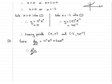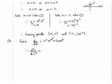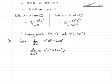We use the product rule again on x²eˣ. We've already done that — that was y originally — and it gave us x²eˣ + 2xeˣ, so we can reuse that result, which saves a bit of time. Now we move on to the second term.